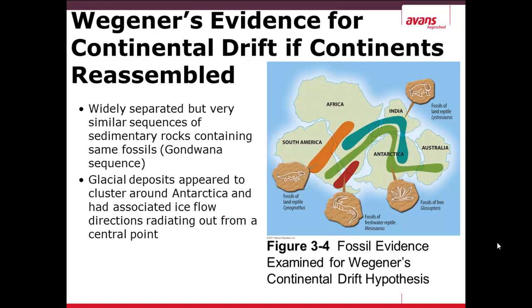He also noticed that glacial deposits appeared in Antarctica, and these were associated with ice flows which create land ridges radiating out from a central point. Lastly, ages of rocks were similar on mountain belts on different continents, so rocks in the Indian subcontinent matched with the corresponding mountain rocks in Africa.